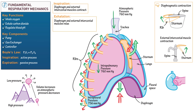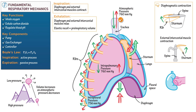Expiration is a passive process. During expiration the thoracic muscles relax, and the lungs elastically recoil to their pre-inspiratory volume. The elastic connective tissue in the lungs and thoracic wall produces this recoil, analogous to first stretching and then releasing a rubber band. As lung volume decreases, intrapulmonary pressure increases to above atmospheric pressure, creating a pressure gradient that facilitates expiration. Air flows from the lungs out through the trachea and into the atmosphere, exhaling carbon dioxide before inspiration begins again.